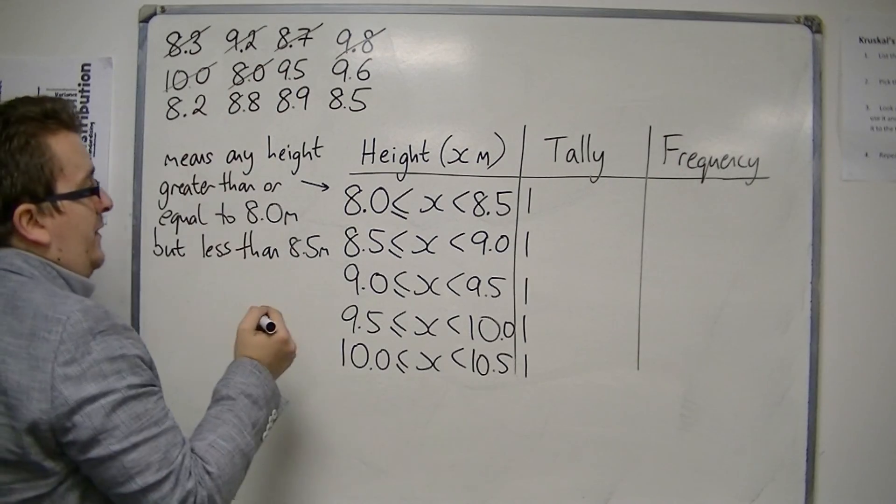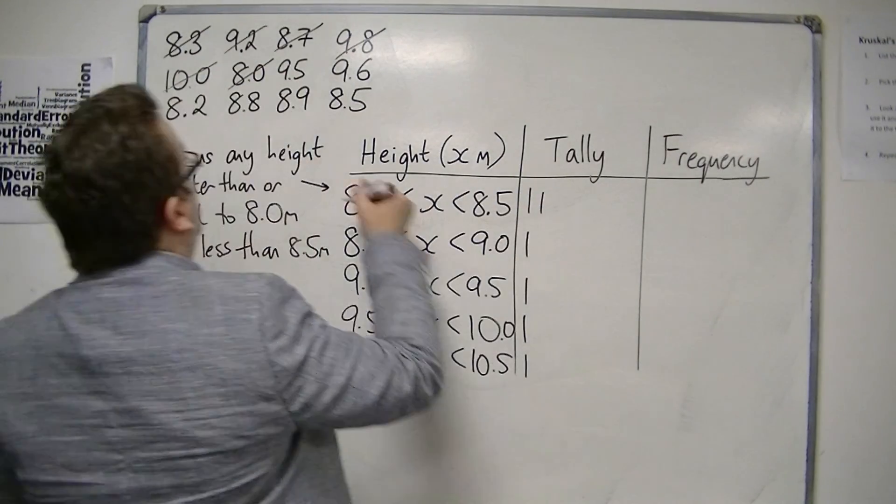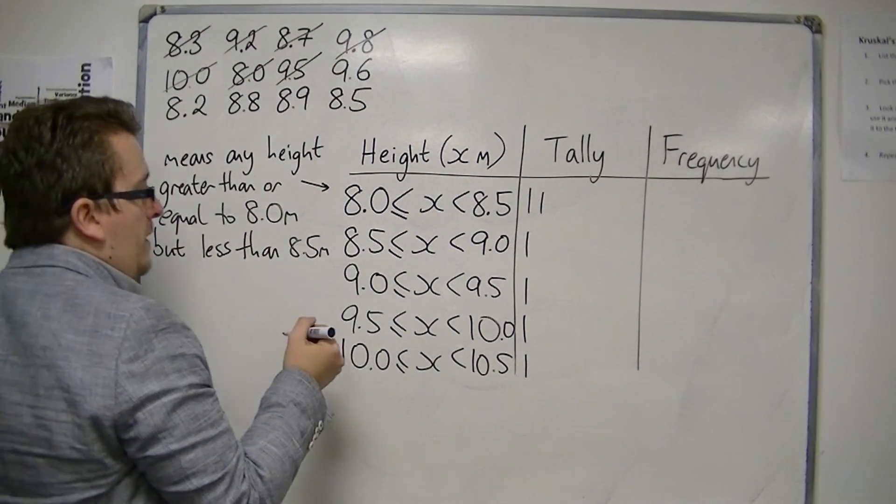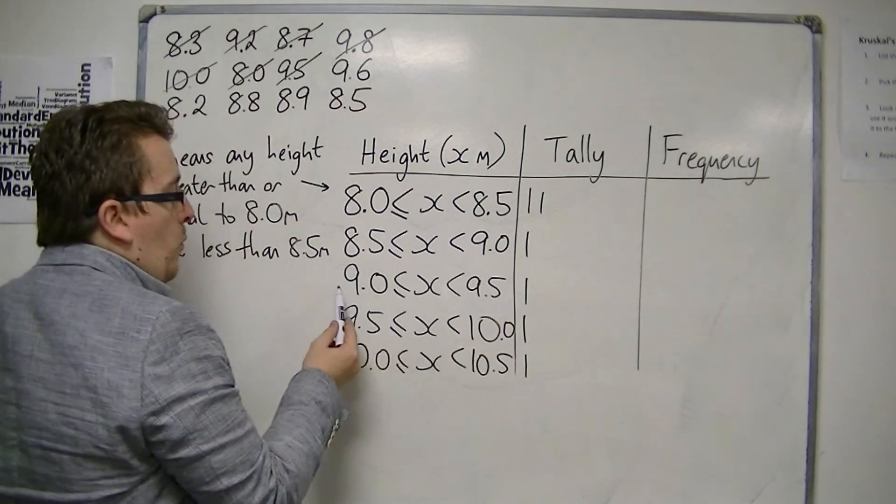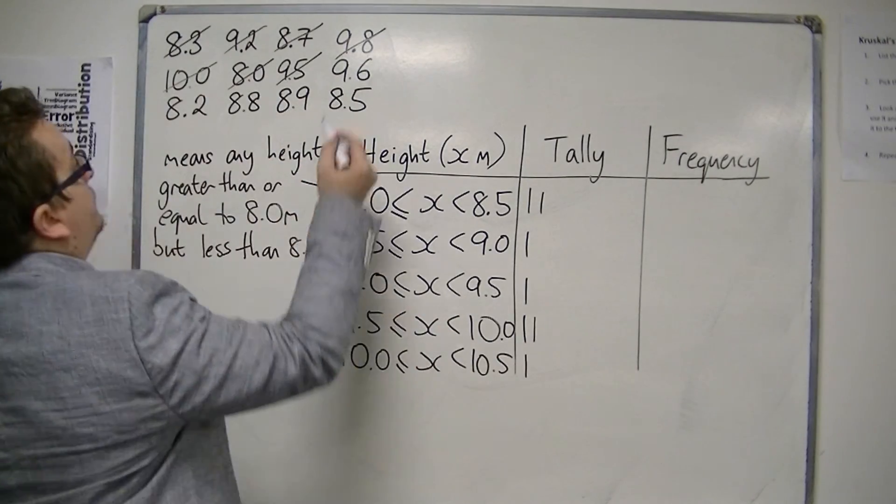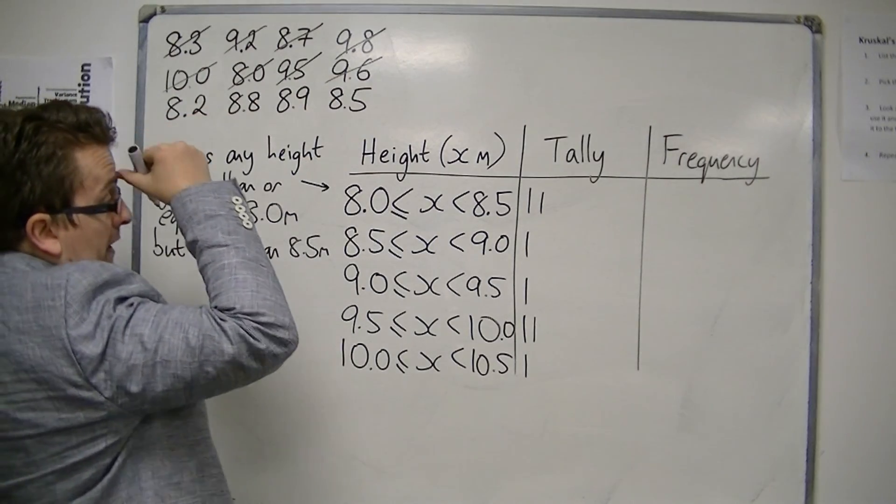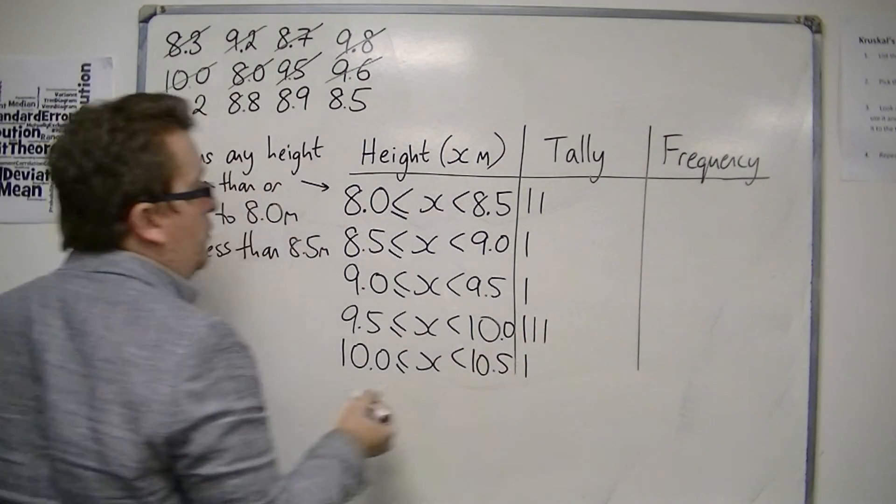Then I have 8, so 8 has to go in this group. Then 9.5, so 9.5 won't go in this group, it'll go in this group. Then 9.6, so that will also go in that group.